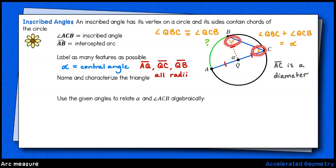This is big news. If these two congruent angles add up to alpha, that means individually each of these angles will be just one half of angle alpha.